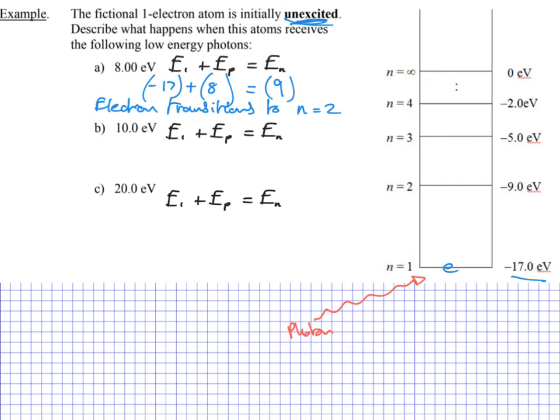Let's look at question B. Same deal, we're going to go through adding in these values. So we start off with negative 17. We're now going to add 10. And that gets us to a negative 7. So you might look at this and say, oh well, this has got more energy, so the electron potentially could jump up even more. Let's see.